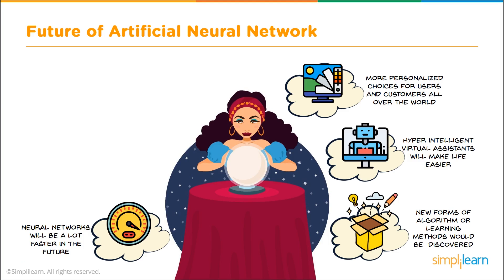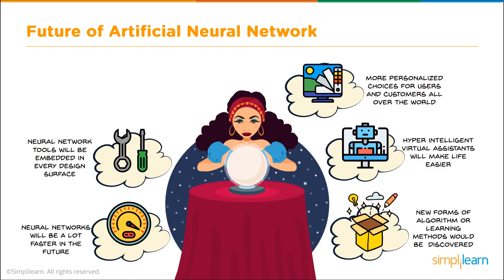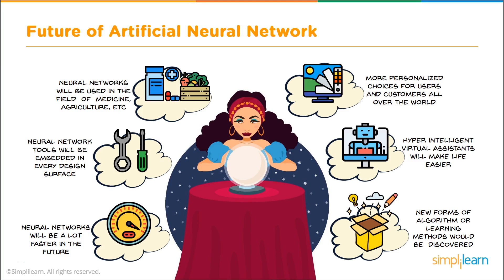Neural networks will be a lot faster in the future, and neural network tools will be embedded in every design surface — you can already buy a mini neural network that plugs into a cheap processing board, making it faster by moving computation to hardware rather than software. Neural networks will be used in the fields of medicine, agriculture, physics, and discoveries — going from PhD-level research on T cells to something anyone can access and process data on, with shared data systems opening the world to anyone wanting to start exploring neural networks.